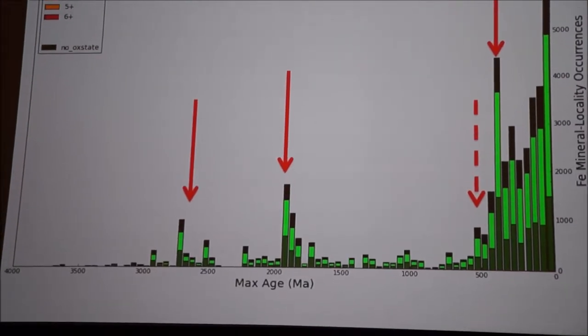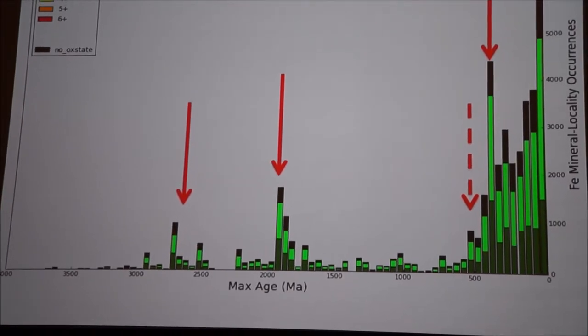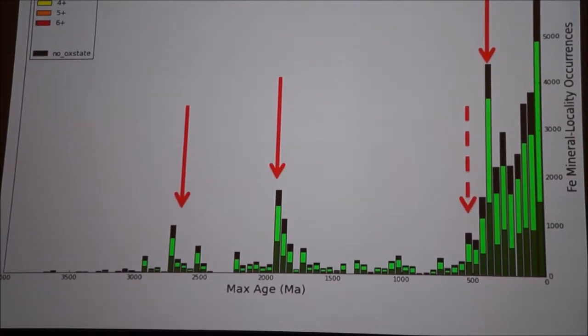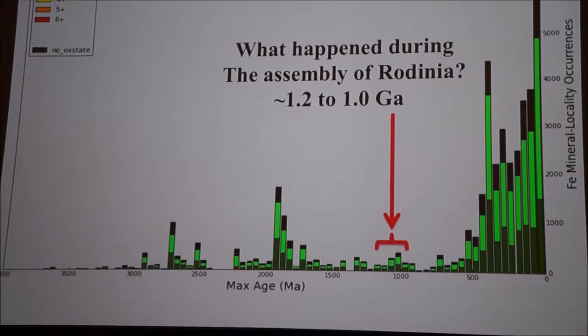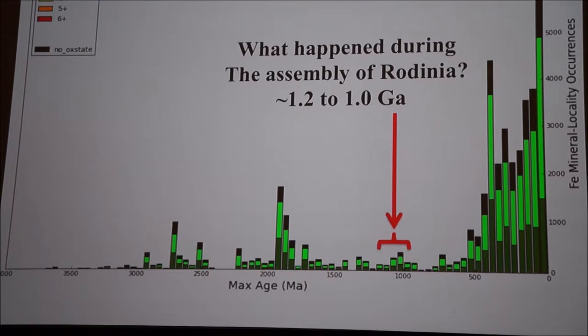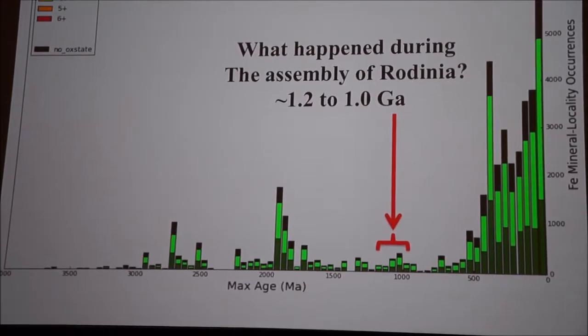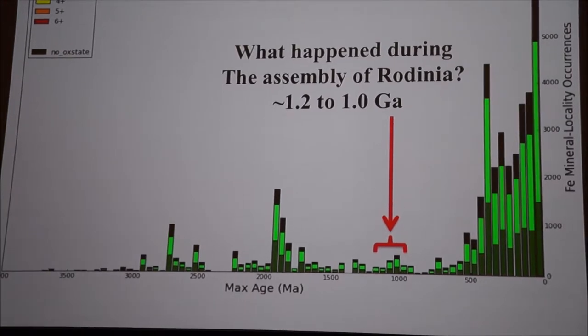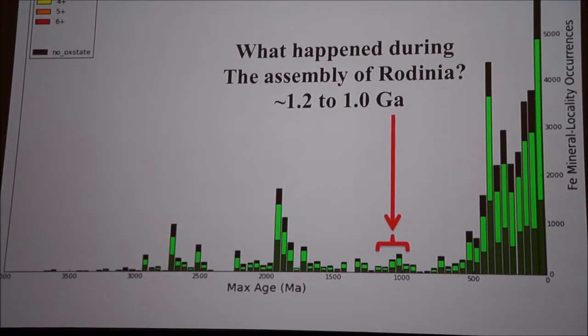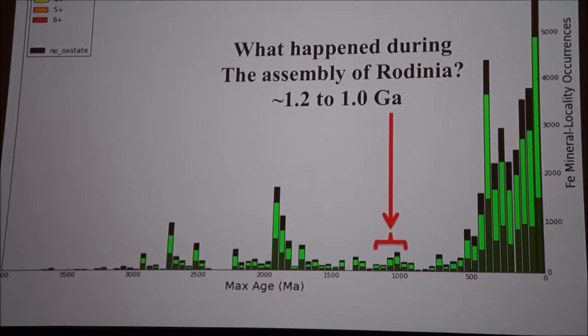We can see the same thing. This is now iron, only iron minerals through time. You see the supercontinent cycle reflected. But then this period of Rodinia assembly, which is very prominent in the zircon record, simply doesn't occur in many, many other elements. And we're studying this right now, trying to understand why this particular supercontinent cycle seems to be very different from everything else. So there's a lot of details wrapped up in this kind of data.